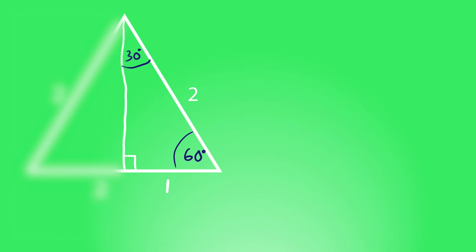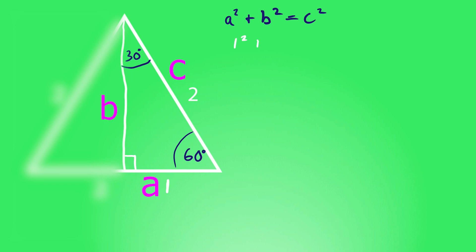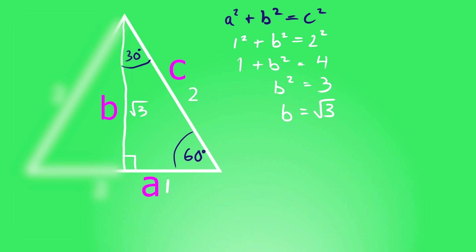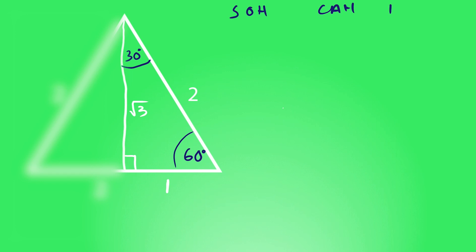We use Pythagoras' theorem to find the vertical length. We have one squared plus b squared equals two squared. One plus b squared equals four, so b squared equals three, meaning b equals the square root of three. So this vertical side has length root three. Our triangle now has sides of one, two, and root three.